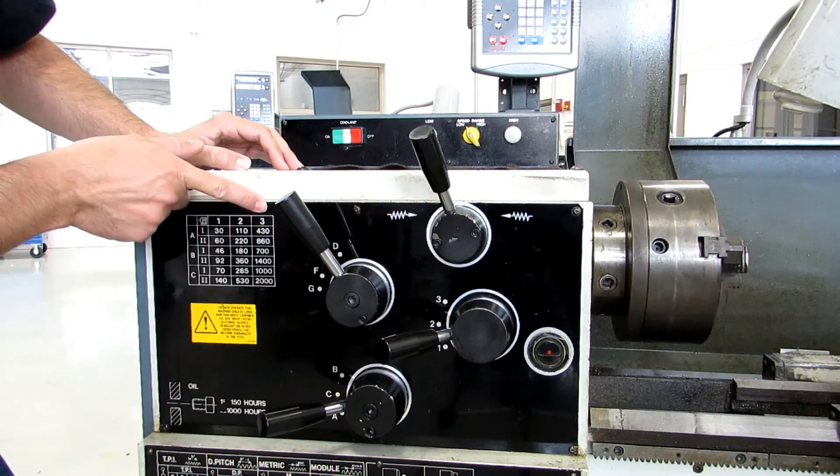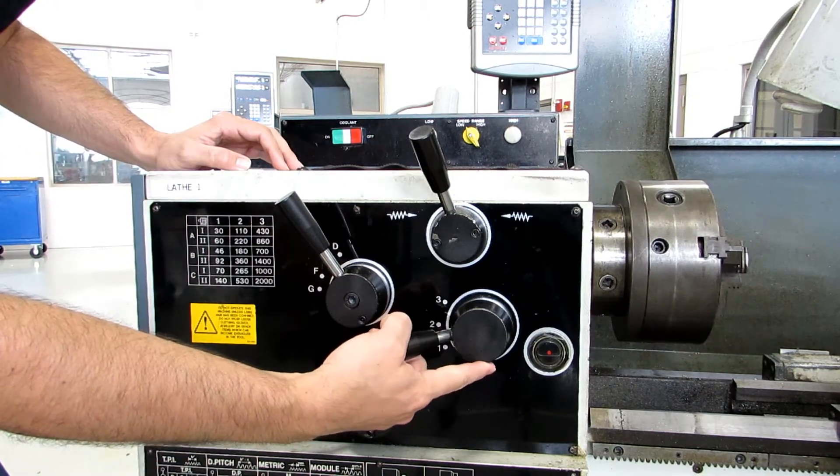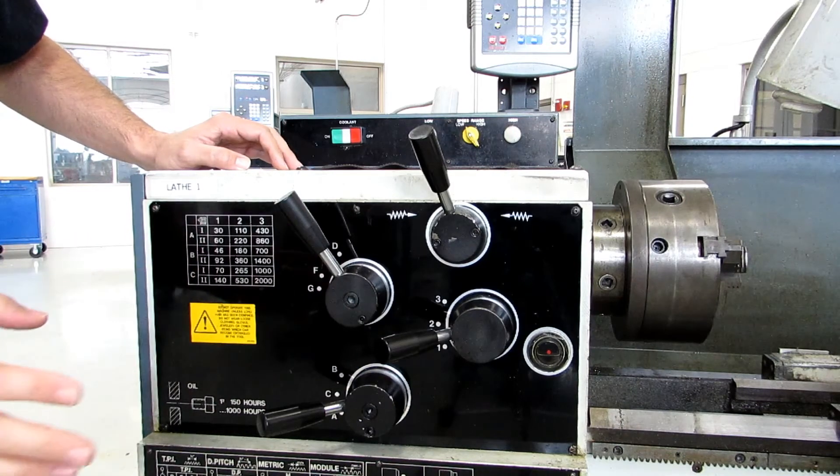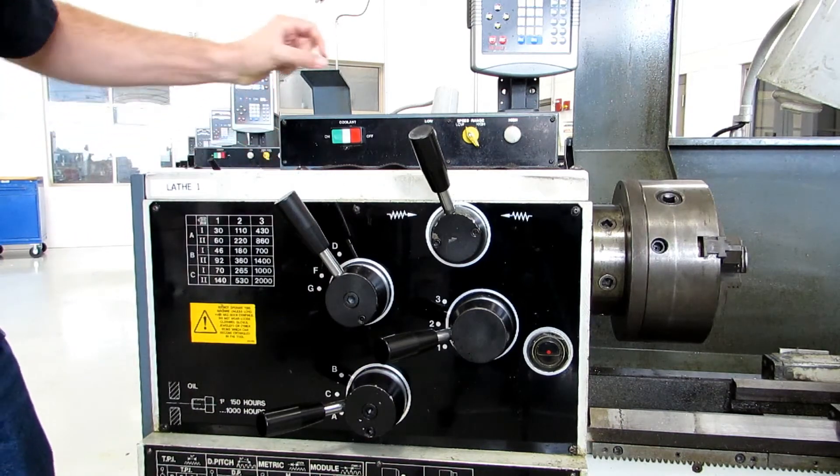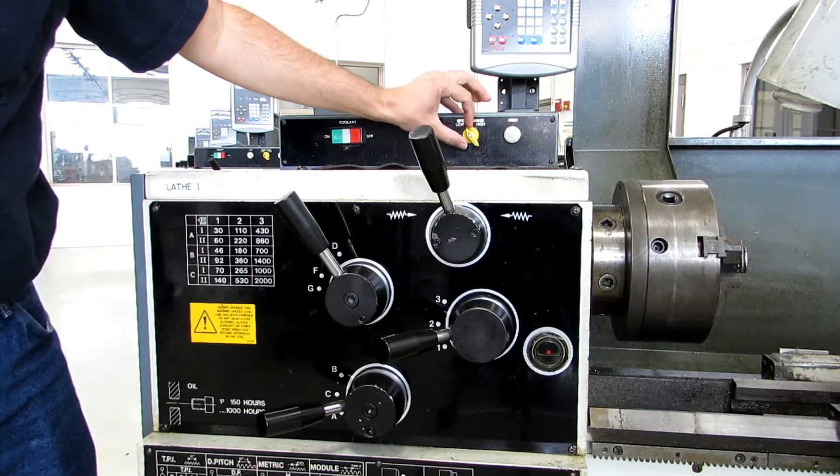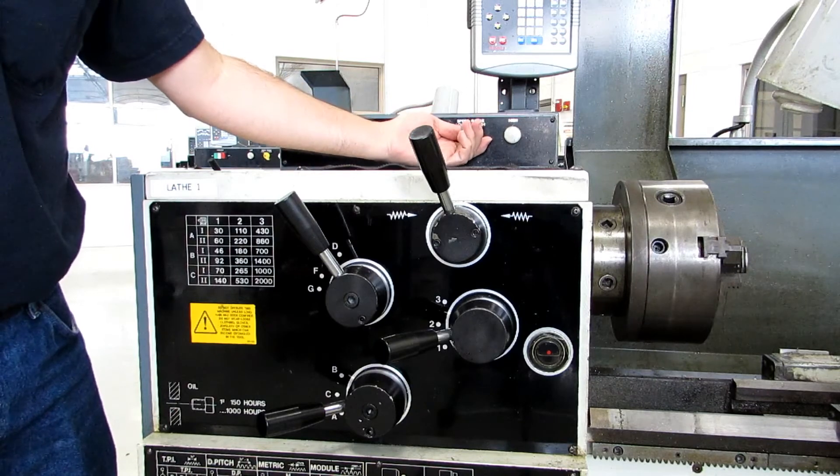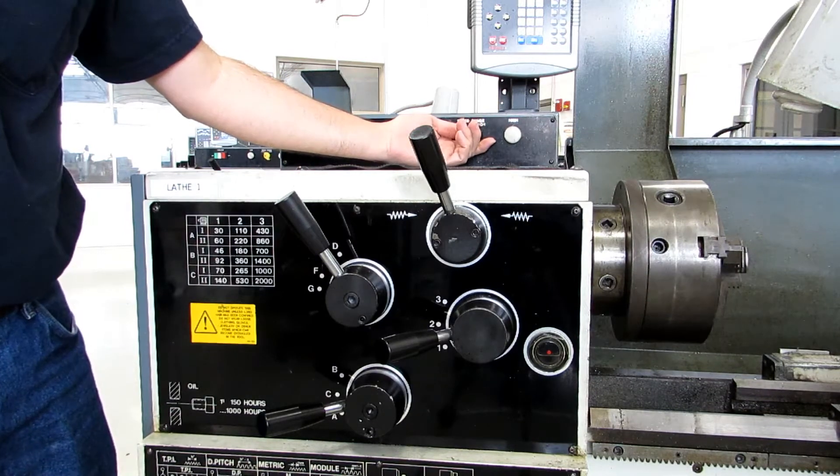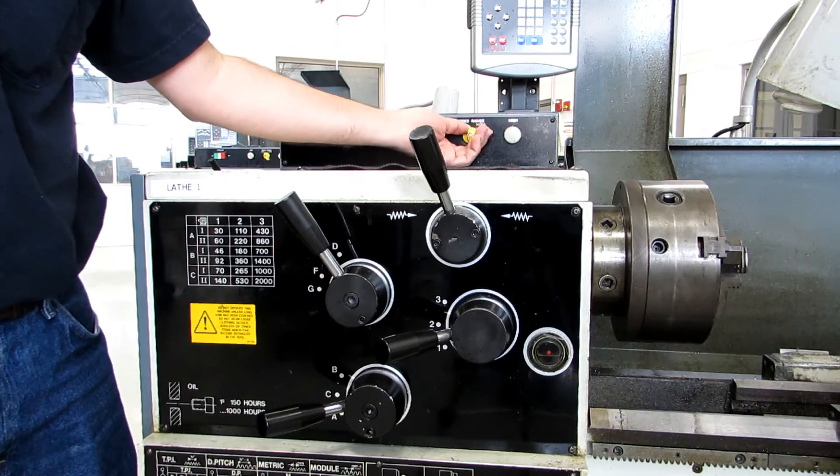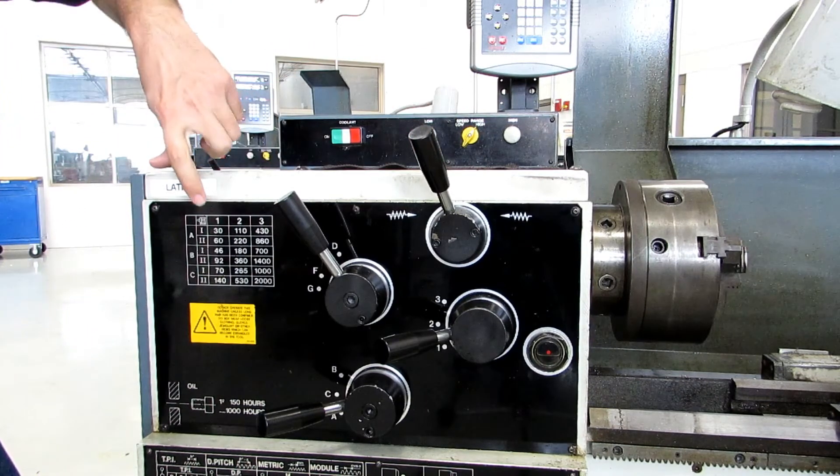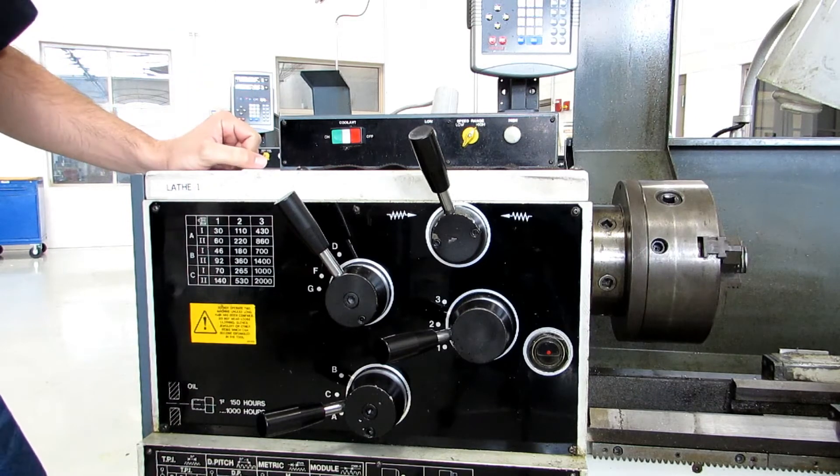And then you have 1, 2, and 3, which is this handle over here. You also have Roman numerals 1 and 2, and that is high and low. So Roman numeral 1 is low, and it's this switch back here, the yellow one. It's a two-speed motor, so if you switch it into low, it's half as fast as high. If you needed it to be in high, you would flip it over there.